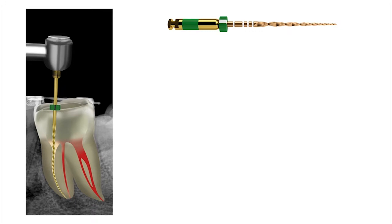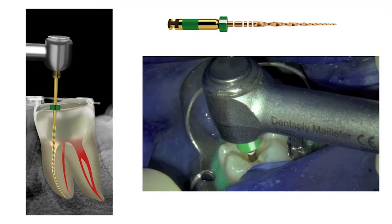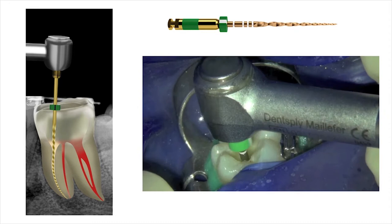A size medium WaveOne Gold reciprocating file was selected for root canal preparation, taking into account the size of the root canals. The access cavity was filled with 3.5% sodium hypochlorite, and here you can see the preparation of the mesiobuccal and mesiolingual root canals using the single WaveOne Gold reciprocating instrument.